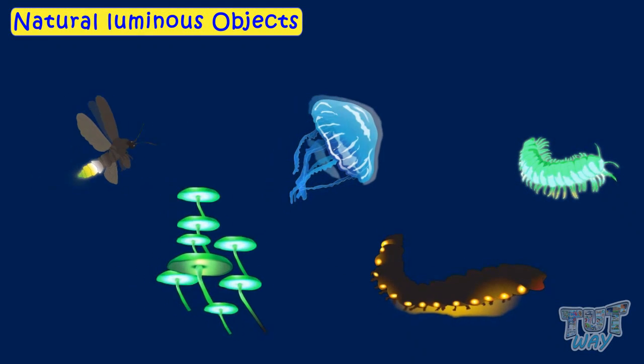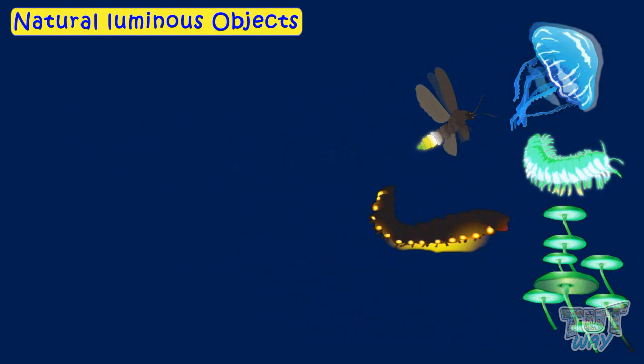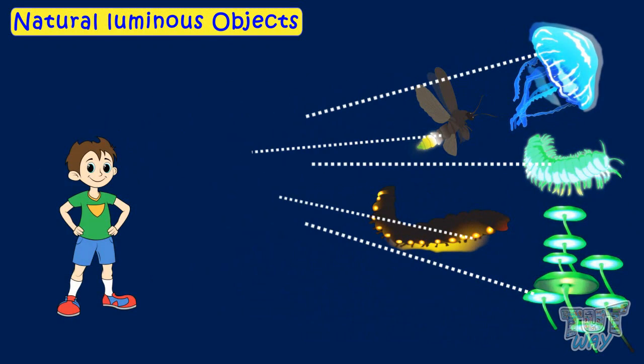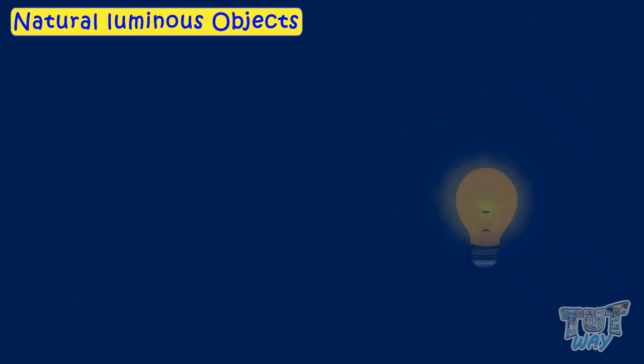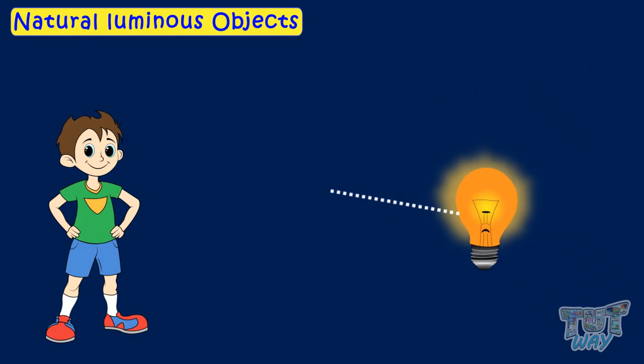We see luminous objects because light emitted by them enters our eyes directly. We see this bulb because the light emitted by it is directly entering our eyes.